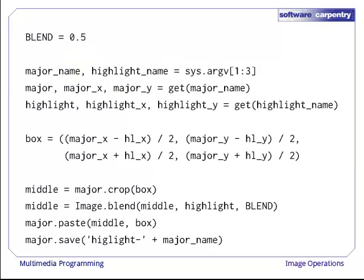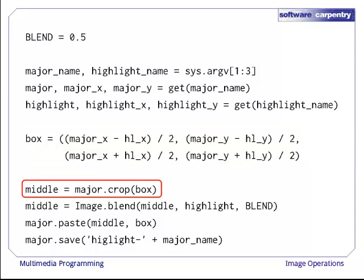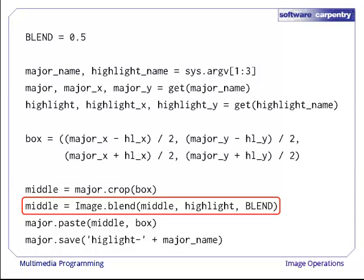With that calculation done, the code is simple. First, we get the images and their sizes — we'll leave writing the get function as an exercise; it's only three lines of Python. We then use the image sizes to calculate the coordinates of the region we're highlighting. Using that box, we can crop a region of the main image. We then call image.blend to combine the cropped subimage with the smaller image we're using as a highlighter. In this case, that will be a simple white square, since blending anything with white lightens it up.